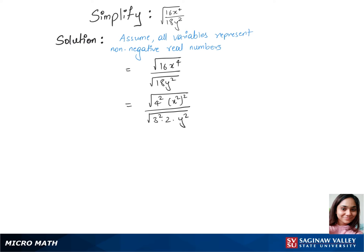In our next step, we'll separate square root between all those terms. So that's square root of 4 square times square root of x square whole square, over square root of 3 square times square root of 2 times square root of y square.